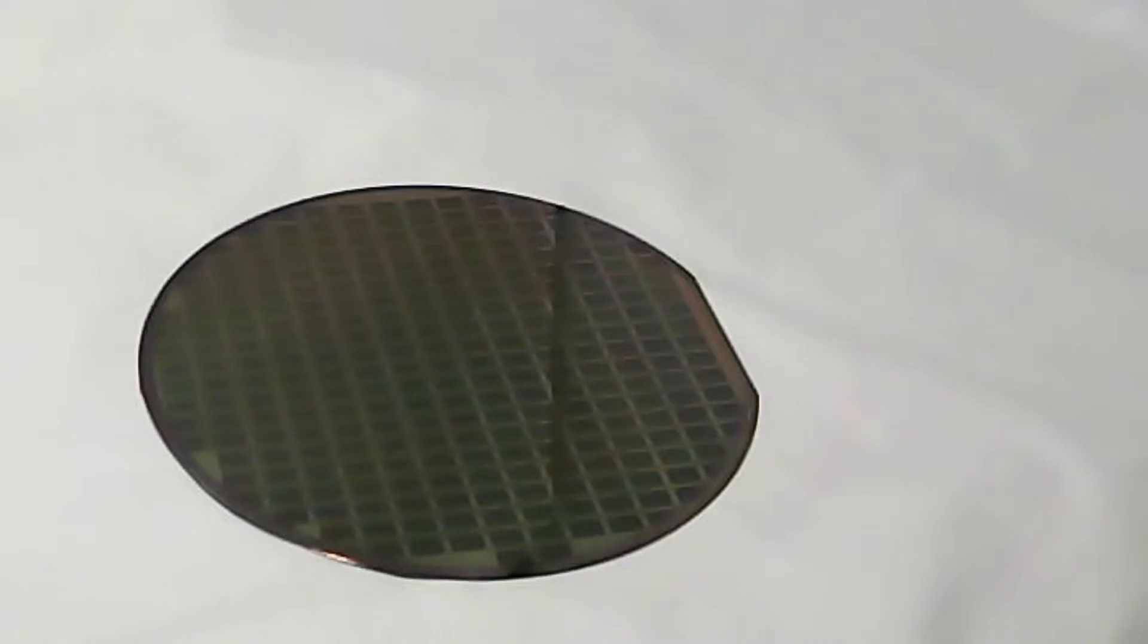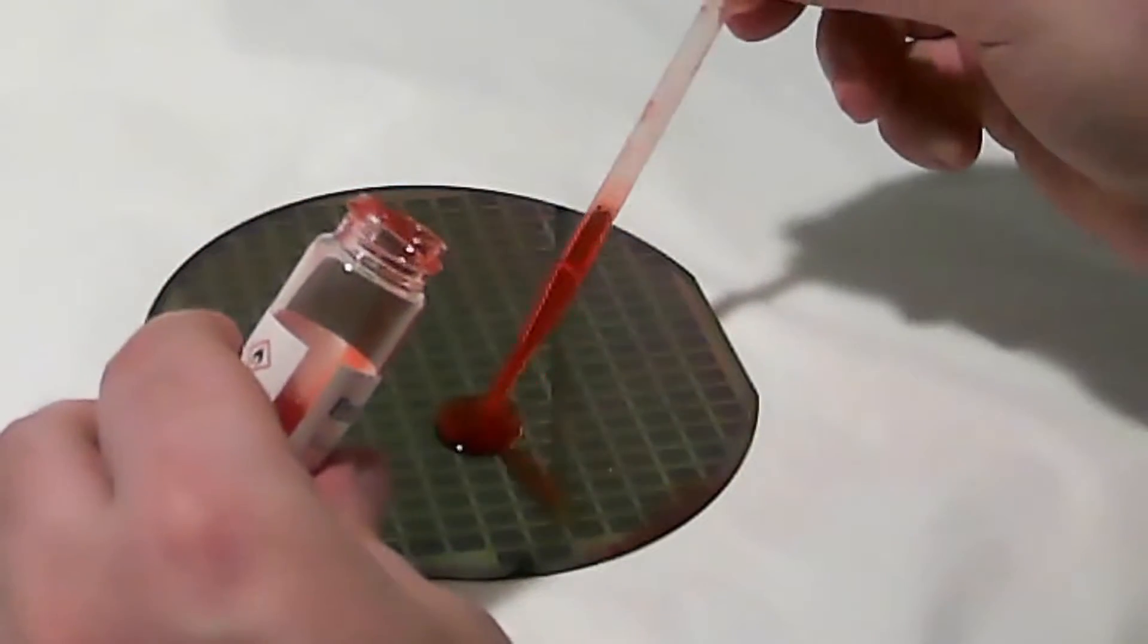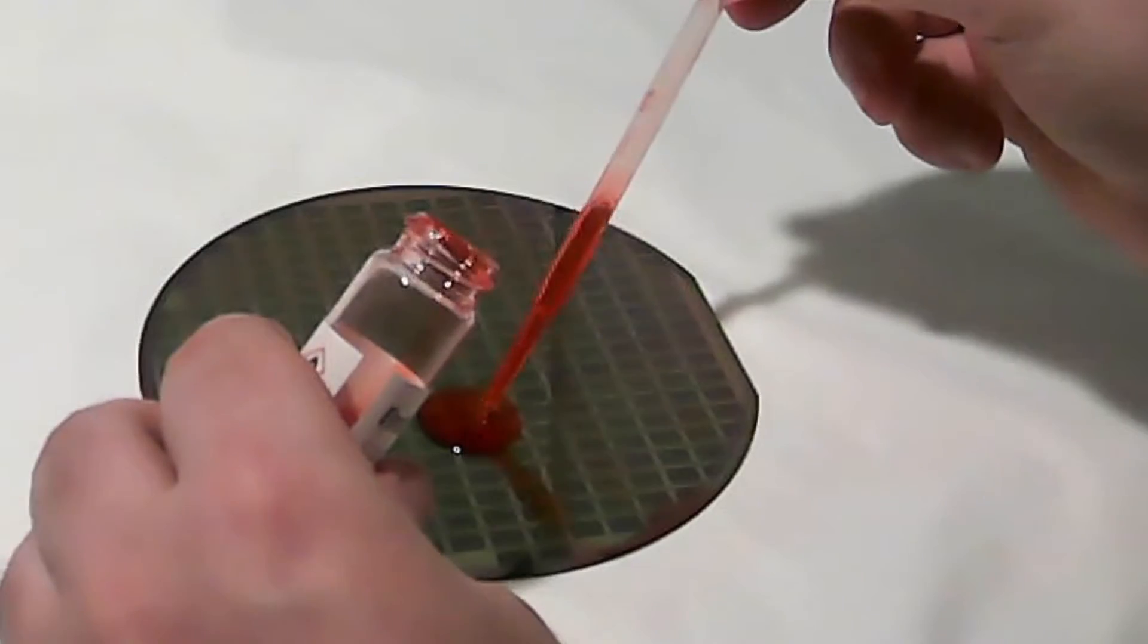This particular wafer is 5 inches in diameter. First we will apply the polymer using a pipette onto the disc surface.